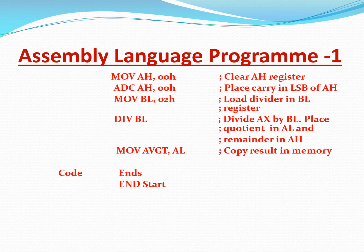Then we clear the AH register by 'MOV AH, 00h' — that is the high byte of AX, which we are going to clear. Whenever you want to clear a register, you just load 00 into it. Then 'ADC AH, 00h' — ADC means add with carry, placing the carry into the LSB of AH. Then 'MOV BL, 02h' — BL is the lower byte of the BX register — so we are loading the divisor 2 into the BL register. Then we say 'DIV BL'.